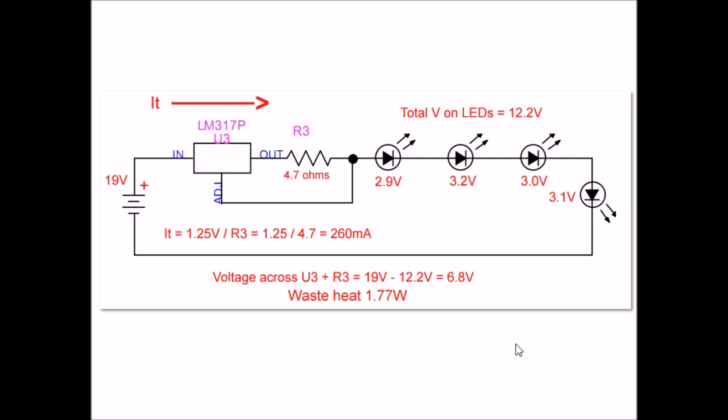Here's the circuit that you actually saw working at the beginning of the video. I used the 19 volt input from a laptop power supply. Here's my LM317 that limits my current. This was a 4.7 ohm resistor, it was a surface mount device, and I had four white LEDs in series.